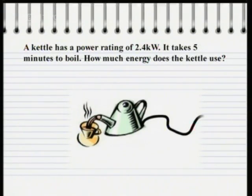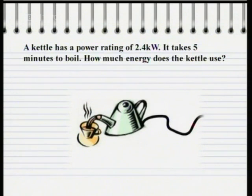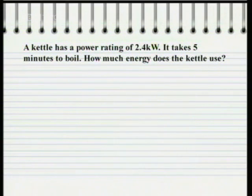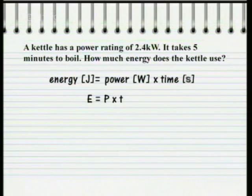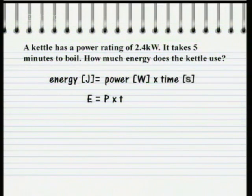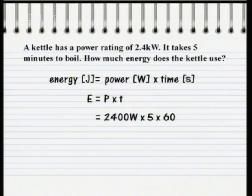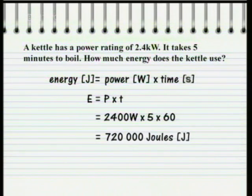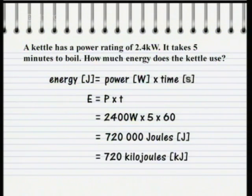Here's a question about electrical energy. A kettle has a power rating of 2.4 kilowatts and it takes 5 minutes to boil — how much energy is used? Energy in joules equals power in watts times time in seconds. So energy E equals 2,400 watts times 5 minutes times 60 to give the time in seconds. That's 720,000 joules, or 720 kilojoules.